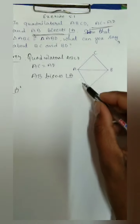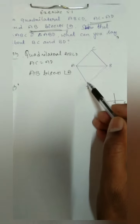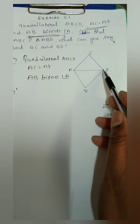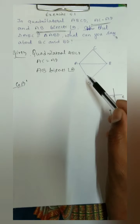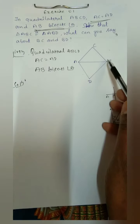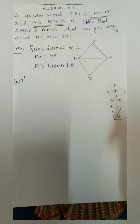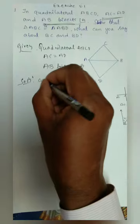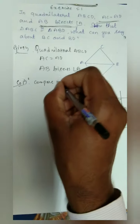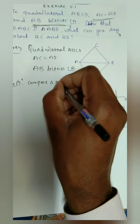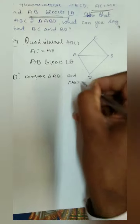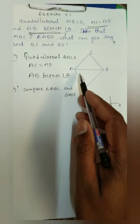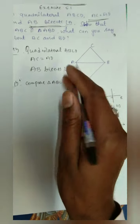Solution: In quadrilateral ABCD, AB is a diagonal that divides the quadrilateral into two equal parts, forming two triangles. Now we compare triangle ABC and triangle ABD.